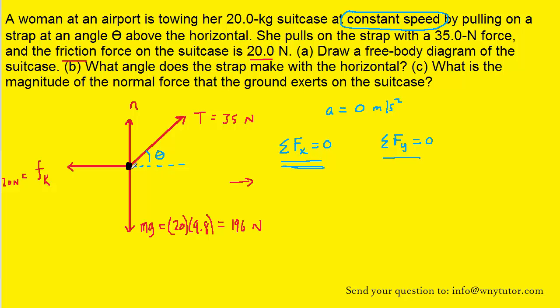Now, there will be two components for tension. Let's take a look at them. We're going to have the x component and the y component. Now, using trigonometry, we can note that the x component is going to be 35 times the cosine of the angle theta. And then the y component is going to be 35 times the sine of that angle.